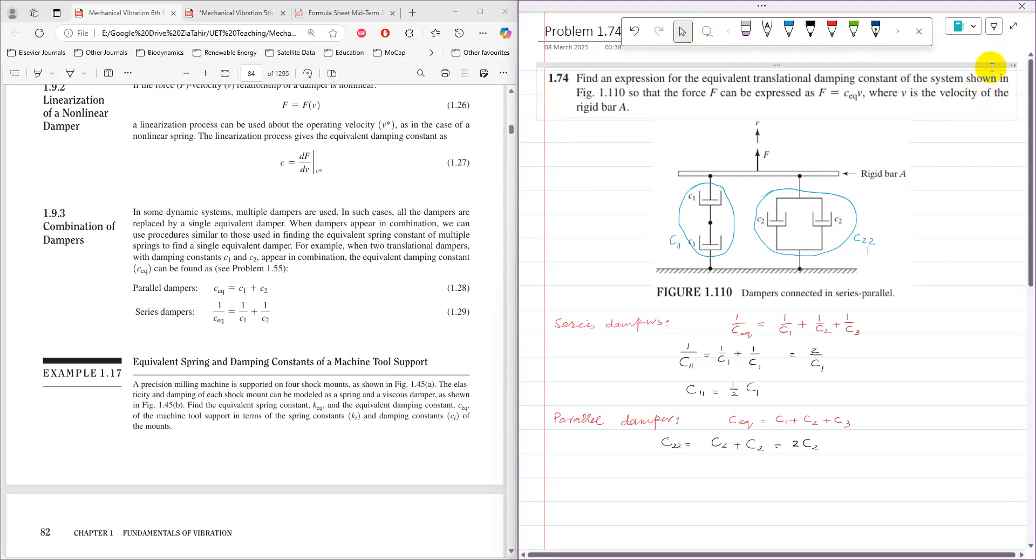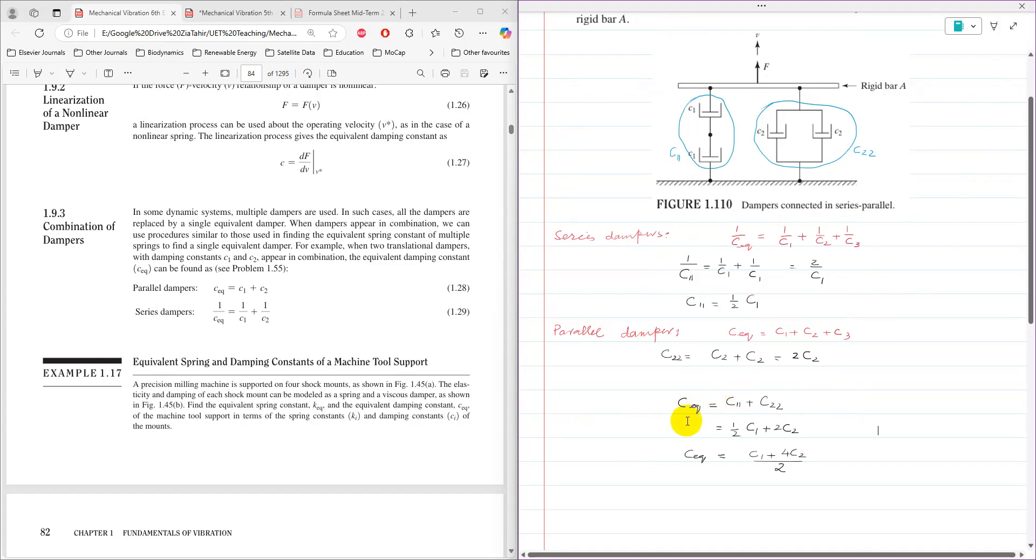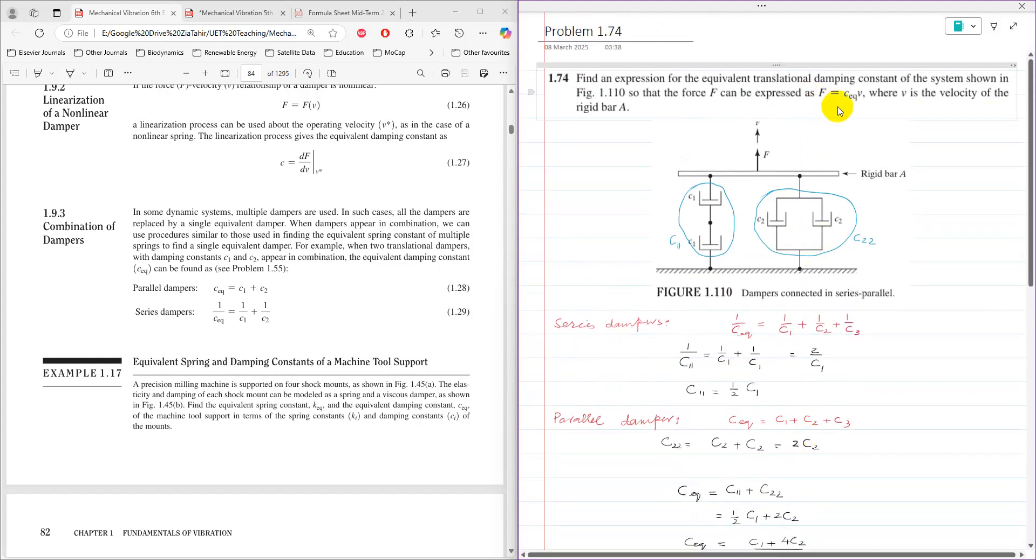When c11 and c22 are connected in parallel, their equivalent damping constant is just simple addition. So c_equivalent equals c11 plus c22. I have those values, so substituting them: c11 is c1 over 2 and c22 is 2c2. Writing as a single term gives c1 plus 4c2, all over 2.